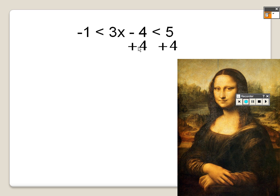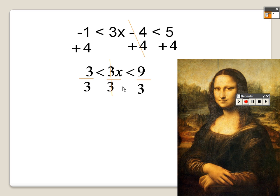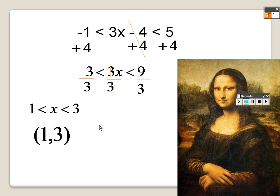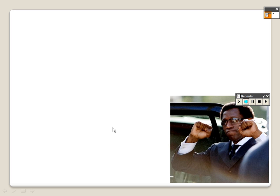When you rewrite this you add 4 to both sides, so that's going to be a 3, a 9, and a 3x in the middle. Divide everything by 3 and I get a 1 and a 3 on the outside. Because it's a less than sign it's a curved bracket on each side, and the answer is in between 1 and 3.